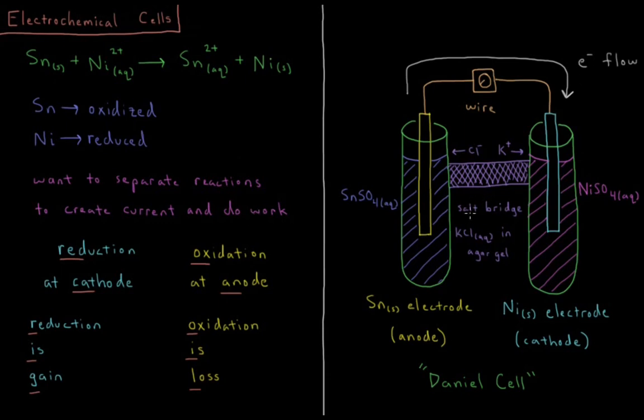So the type of setup that we can use to do so would be called an electrochemical cell. So one example of an electrochemical cell called a Daniel cell would be the type of setup that I've got described over here. So we've got two test tubes, we've got one which is a beaker of tin sulfate in aqueous solution, we've got another which is a beaker of nickel sulfate in aqueous solution.